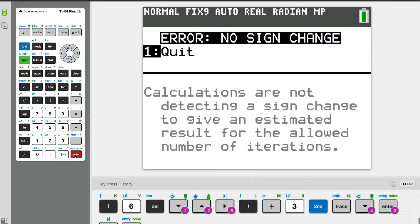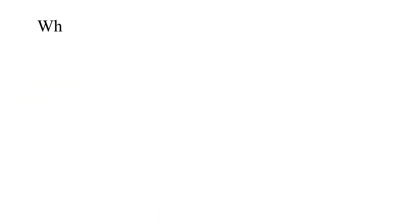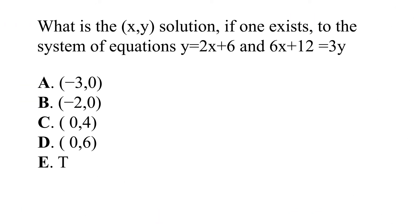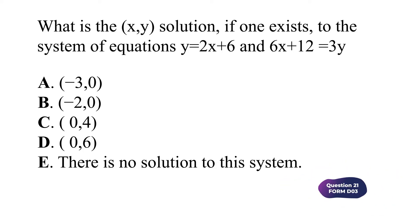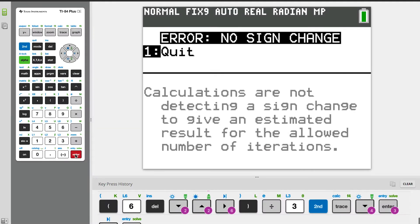And now we get this weird little thing here where it says error, no sign change. And this is the error that you'll actually always get if the systems of equations doesn't have a solution. So for all of you who are looking at this question and saying, I think the answer is E, you are absolutely correct. If the systems of equations did have a solution, let's say it was a negative three comma zero, it would have given us that as the solution. So on to our next question.